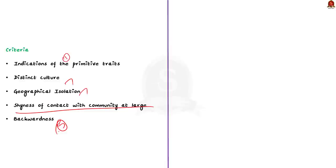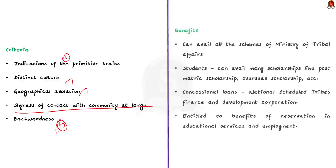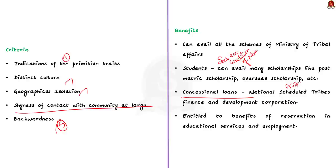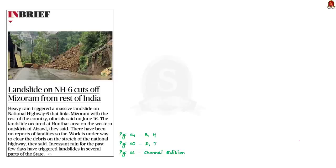What are the benefits a community enjoys if specified as a Scheduled Tribe? If a community is given Scheduled Tribe status, they can avail all schemes of the Ministry of Tribal Affairs, which aims to improve the socio-economic condition of the tribes. Students from the community can avail many scholarships like post-matric scholarship, overseas scholarship, and others. They can also get concessional loans from the National Scheduled Tribes Finance and Development Corporation. Most importantly, they are entitled to benefits of reservation in educational services and employment.